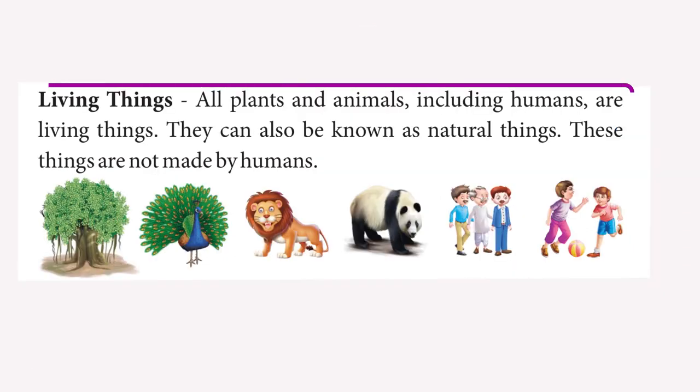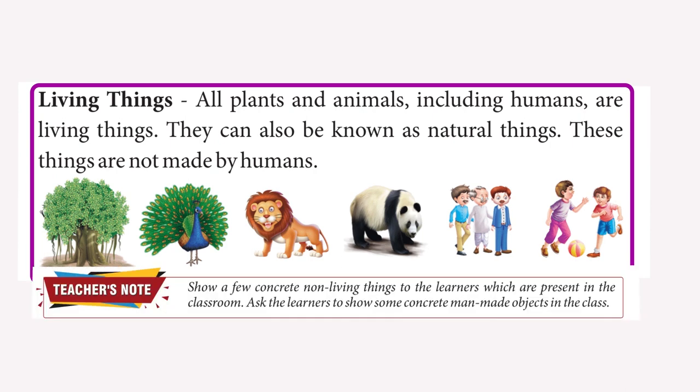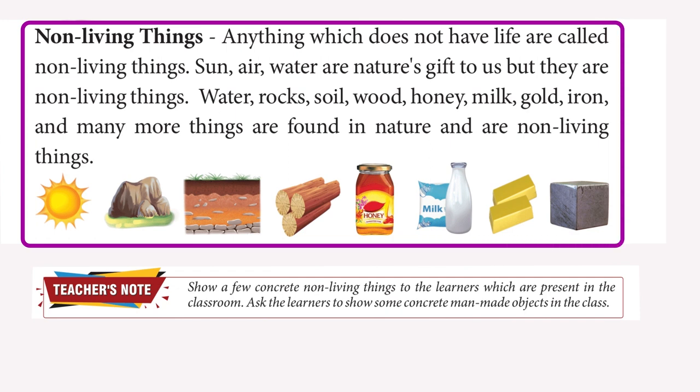Living Things: All plants and animals including humans are living things. They can also be known as natural things. These things are not made by humans. Non-living Things: Anything which does not have life is called a non-living thing. Sun, air, water, rocks, soil, wood, honey, milk, gold, iron and many more things are found in nature and are non-living things.